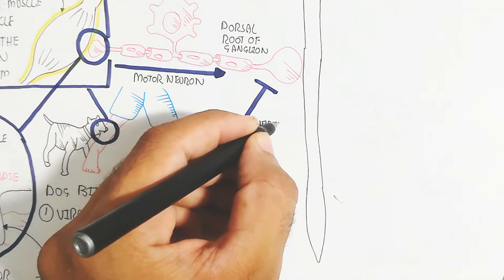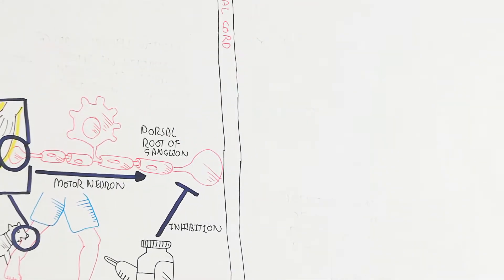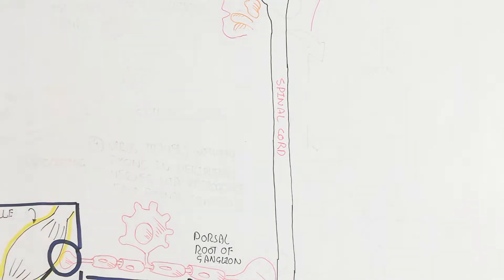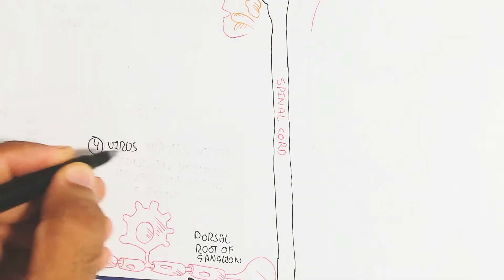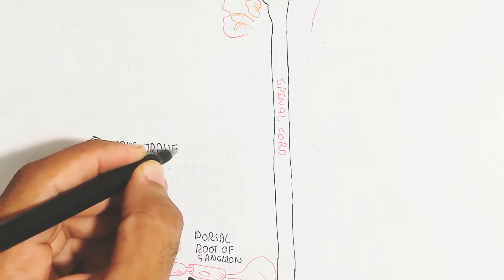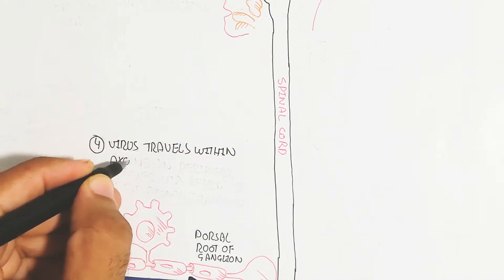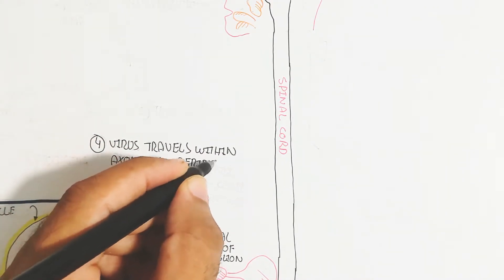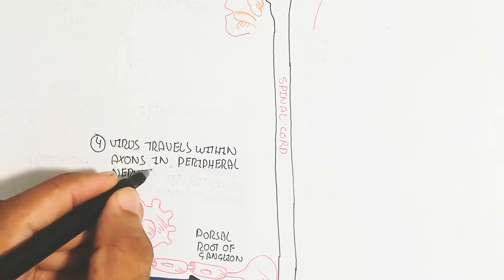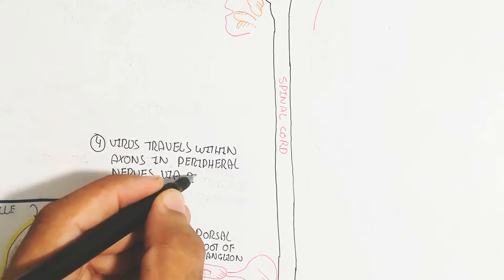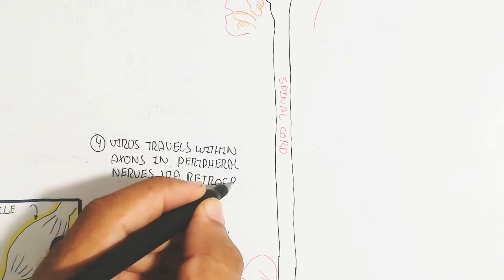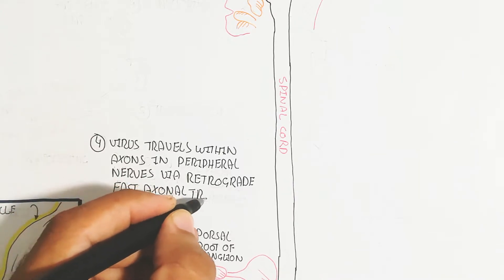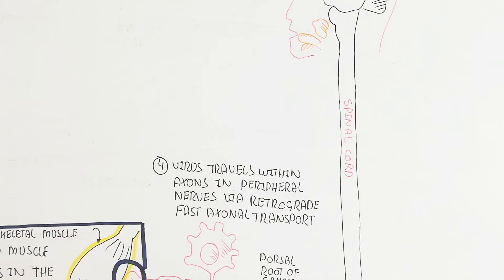A vaccine can inhibit this reaction at the neuromuscular junction. Step four is that the virus travels within the axon in the peripheral nervous system via retrograde fast axonal transport.